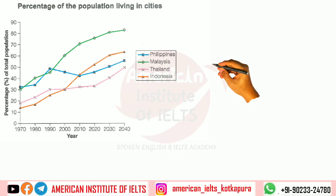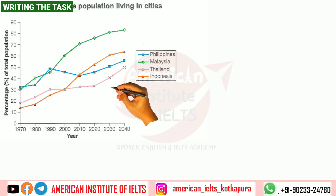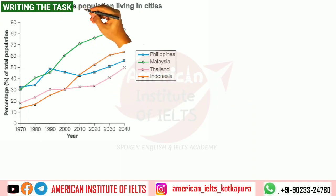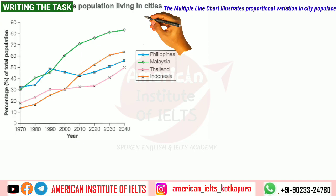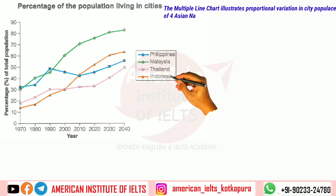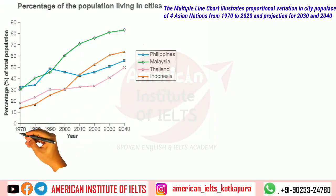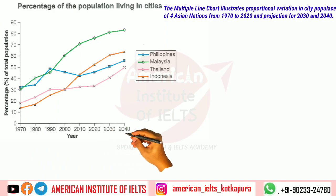With our analysis complete, we can now start writing our task. For the introduction we write: 'The multi-line graph illustrates proportional variation in city populace of four Asian countries from 1970 to 2020, with projections for 2030 and 2040.' With this, our introduction is complete.